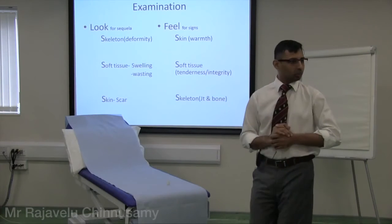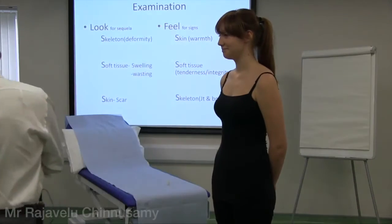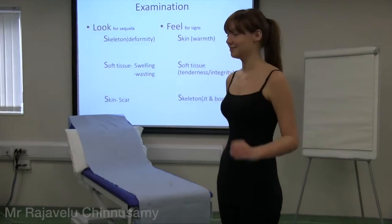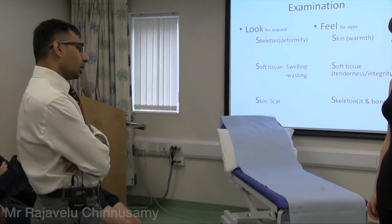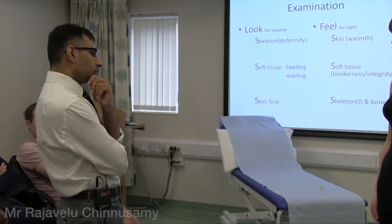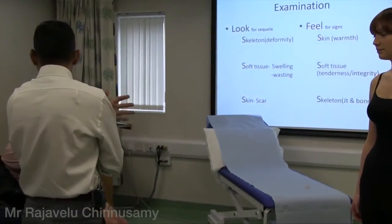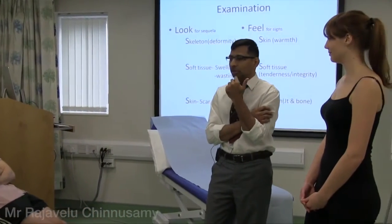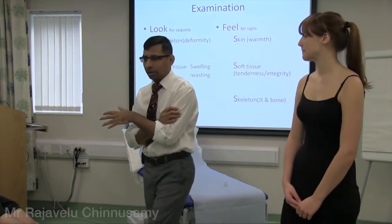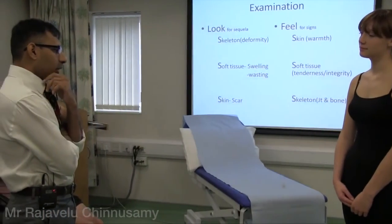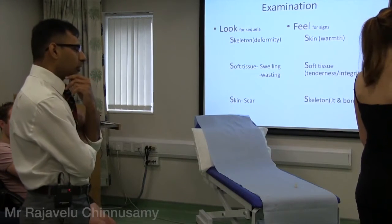When you look, you stand about 3 steps away — like any first time you see anybody, you don't go very close. Skeleton is 3 steps away. So you observe: no obvious deformity, no soft tissue swelling or wasting, and you come closer — skin over is normal. This applies to front, side, and back views. Ask the patient to turn to the side: no obvious deformity, swelling or wasting, skin over is normal. Then turn to the back: no obvious deformity, swelling or wasting, skin over is normal. It is the same for all joints.